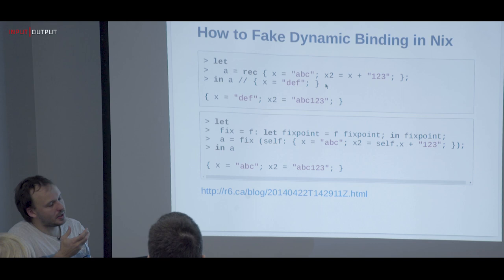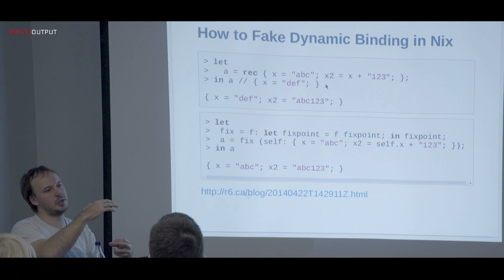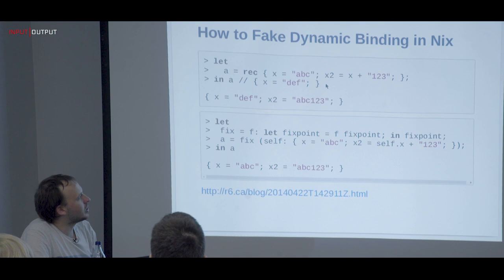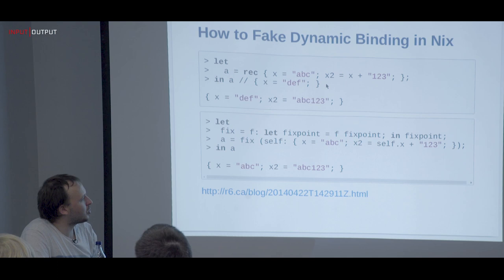Why does this matter? We want a package set where we can add new things, but we don't want references in the original ones to keep their old values — we want the whole thing to be precisely overwritten. So we define the fixed point or Y combinator, and this fixed function gets the return value as an input.